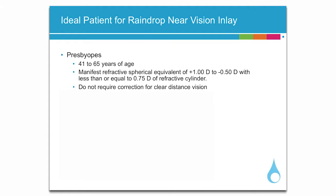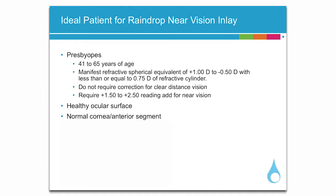The best Raindrop candidates are those who do not require correction for clear distance vision but require at least plus 1.5 reading add for clear near vision. They should also have a healthy ocular surface with a normal cornea and anterior segment. As with all elective ophthalmic surgeries, select patients with easygoing personalities.